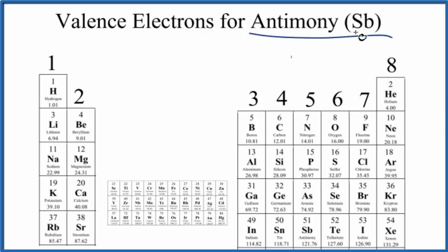So we can find antimony here, Sb, which is right here, and it is in group 15, sometimes called 5a, so it has five valence electrons.